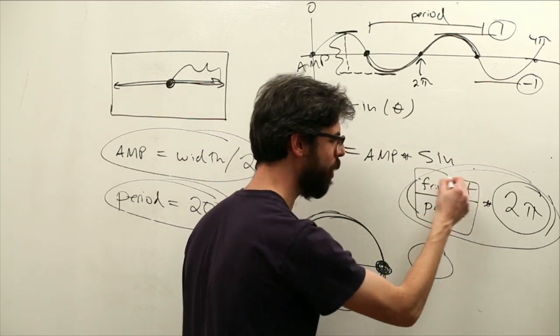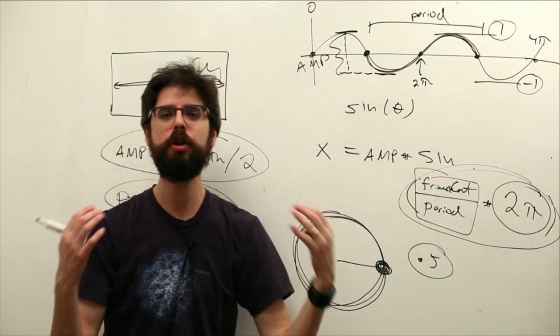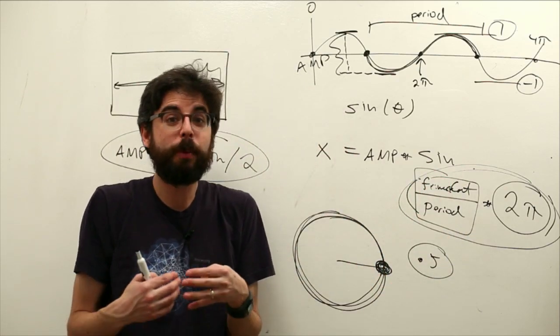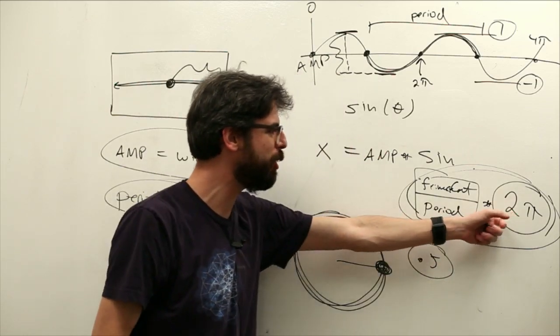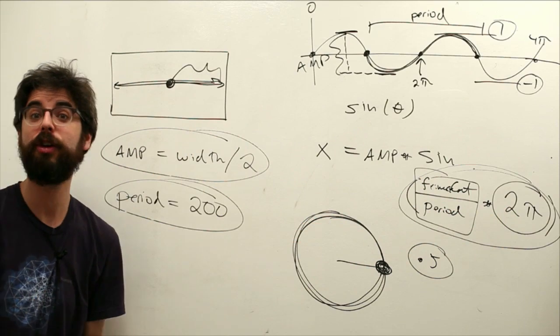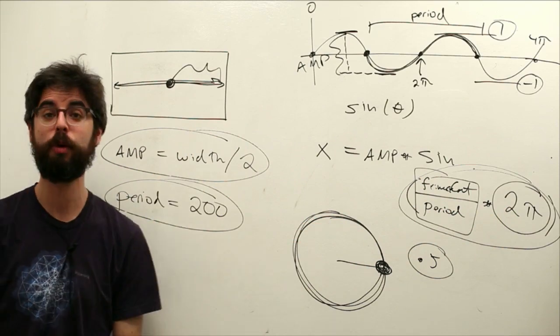So you can see this like a ratio of our current frame count to the period. What percent are we 10% of the way through the period? 50%? 60%? Multiply that by 2pi and we have this full cycle. Let's go see that actually work in a processing sketch.